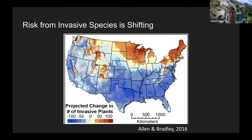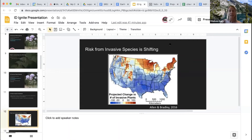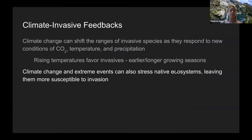Especially in northern latitudes, there will be an increase in invasive plants because as temperatures warm, species migrate northward to find climatically suitable conditions. Looking at Idaho, there are sections projected to be blue or neutral, but also some sections in red that will experience more invasive plants in the future. Additionally, extreme events like drought or fire can stress the native ecosystem and leave native communities more susceptible to invasion.